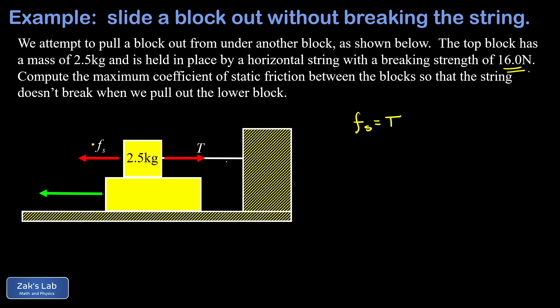We're getting to 16.0 newtons. So we're pushing it as far as we possibly can, close to the breaking strength of the string without actually breaking it. What I want is for my static friction force to be at its maximum value—that means just about to break loose—right when my tension in the string is 16.0 newtons.